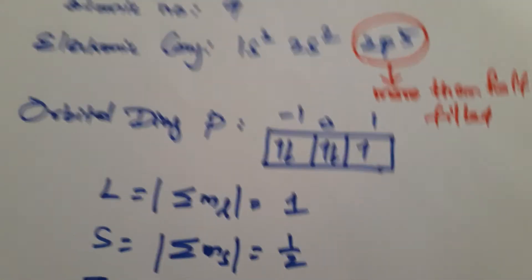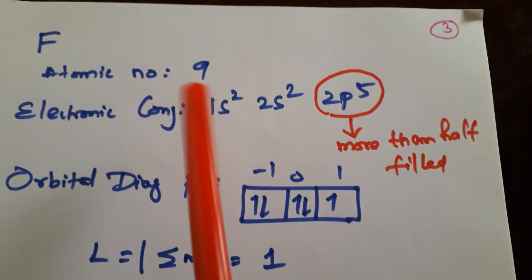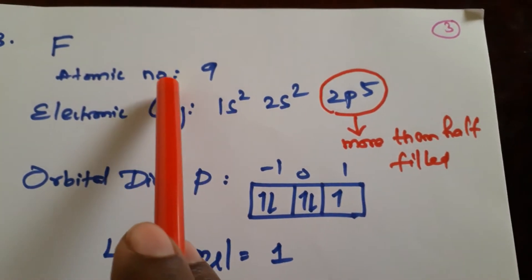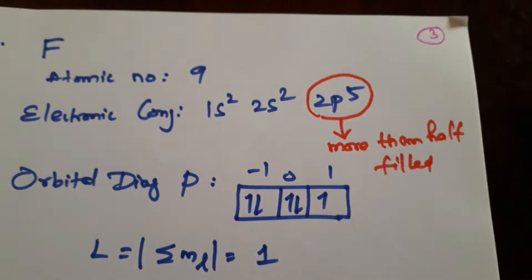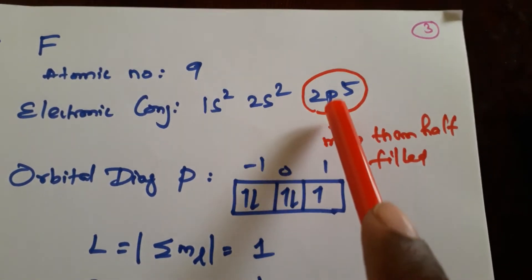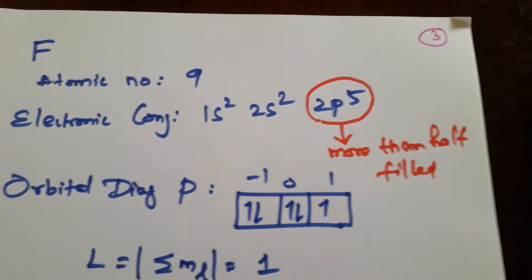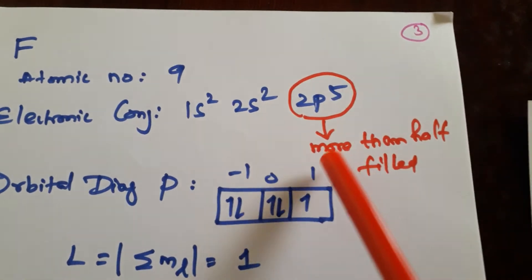Next we move on to this third example, F. F. And here I have taken this, F. Atomic number, same thing. You just follow the same thing. Atomic number is 9, electronic configuration this is the one. And here you see this p. P. P is more than half. P is 5. P can be filled by 6 maximum of 6. But here p is 5. This is more than half-filled.